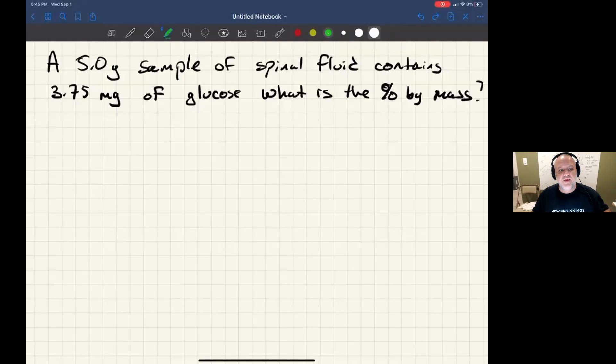Okay, this question asks you to calculate the percent by mass of glucose in a 5-gram sample of spinal fluid, if that 5-gram sample of spinal fluid was found to contain 3.75 milligrams of glucose.